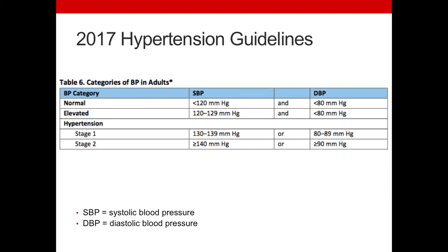It's important to understand whether those in Stage 1 hypertension are at otherwise low risk or high risk for cardiovascular disease. If they've had a stroke or heart attack previously, they would be at high risk. Risk calculations can also be used to evaluate standard risk factors. High risk means more than a 10% chance of having a major event in the next 10 years, requiring more aggressive treatment. For those at low risk, non-drug lifestyle changes would be sufficient. About 30% of people in Stage 1 hypertension would benefit from both lifestyle changes and antihypertensive drugs.